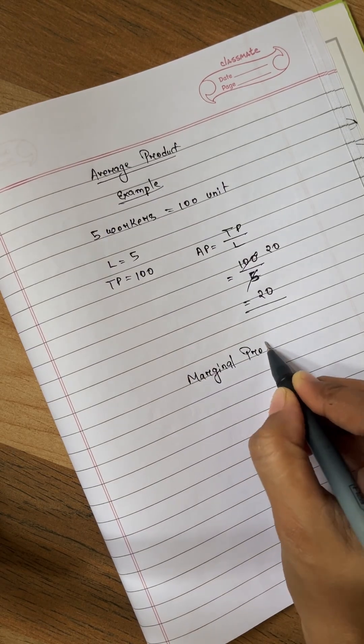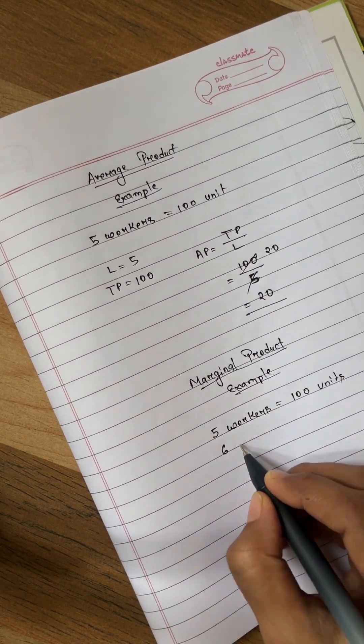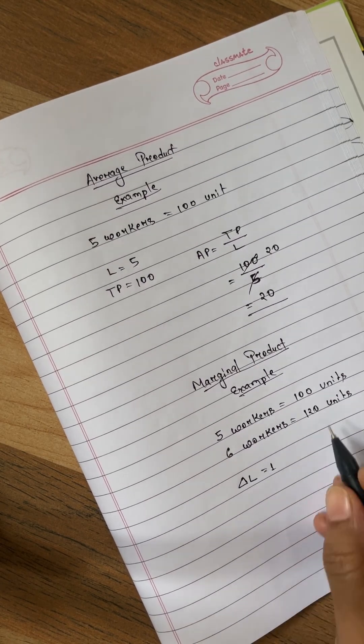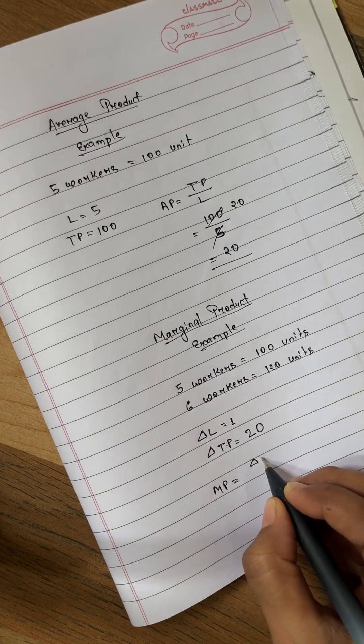Now let's see the example of marginal product. Let's assume 5 workers produces total product 100 units and 6 workers produces the total product of 120 units. Now we have the change in labor that is 6 minus 5 that is 1 and change in total product that is 120 minus 100 that is 20.